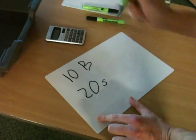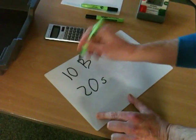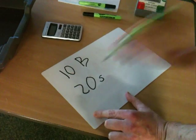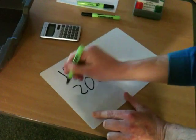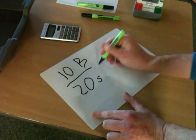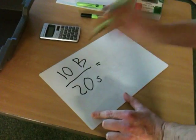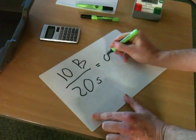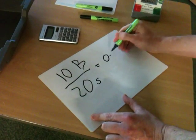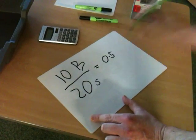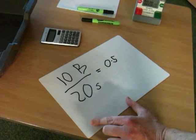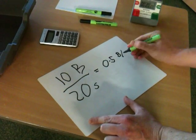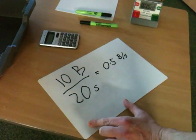And that took 20 seconds. So we've got two pieces of information there: the total number of balls that we transferred and how long it took. And what we could do is a quick sum — we could divide the total number of balls by the time it took, and that will tell us that we transferred, on average, 0.5 balls per second.